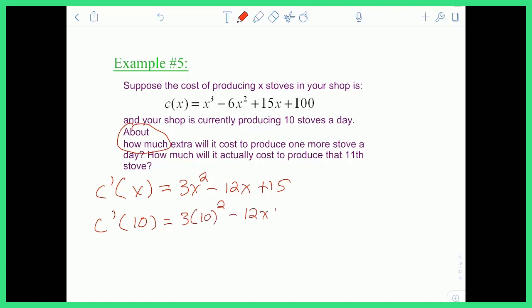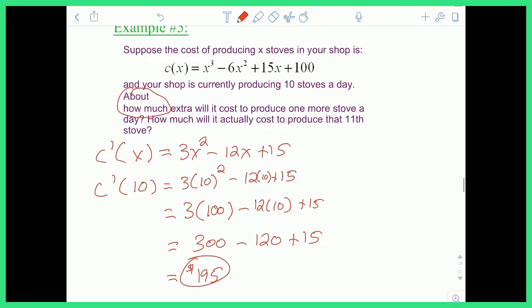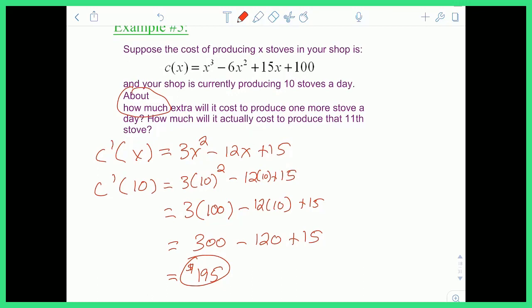I get this right here, which is equal to 3 times 10 squared is 100, minus 12, so that should be a 10. It should be a 10, plus 15, which if I squeeze this down is equal to 300 minus 120 plus 15, which is equal to 195. This is a cost, this is dollars. So what does this mean? This means that approximately my company would have to pay an extra $195 to make an 11th stove.